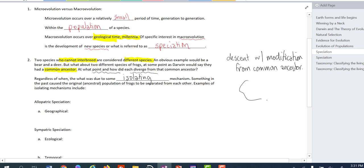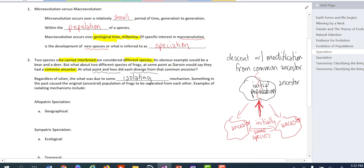This is what macroevolution looks at. Regardless of when, the what was due to some isolating mechanism. We were talking about this briefly on Friday. We think of the founder effect, remember that? Or those examples like the bottleneck and the founder effect of essentially isolating an individual group. These are what are called isolating mechanisms. Something in the past that caused the original ancestral population of frogs to be separated from each other. Whatever it is, we want to think about here's this initial population. This initial population represents the ancestor. And at some point in time, some sort of isolating mechanism created two different populations.